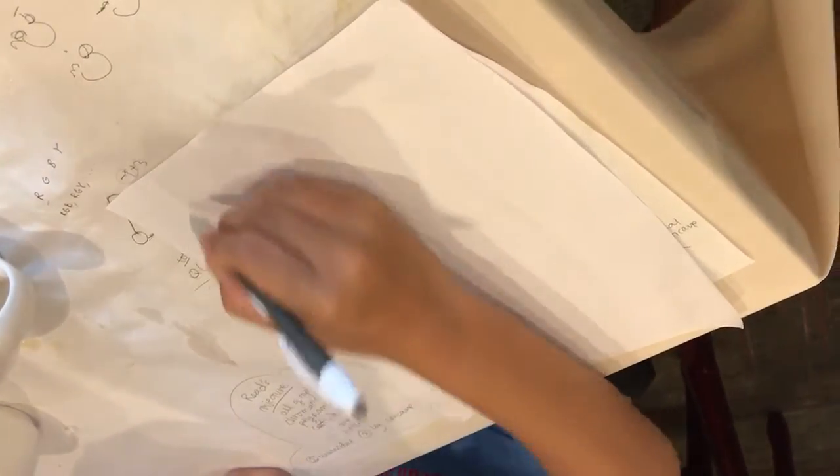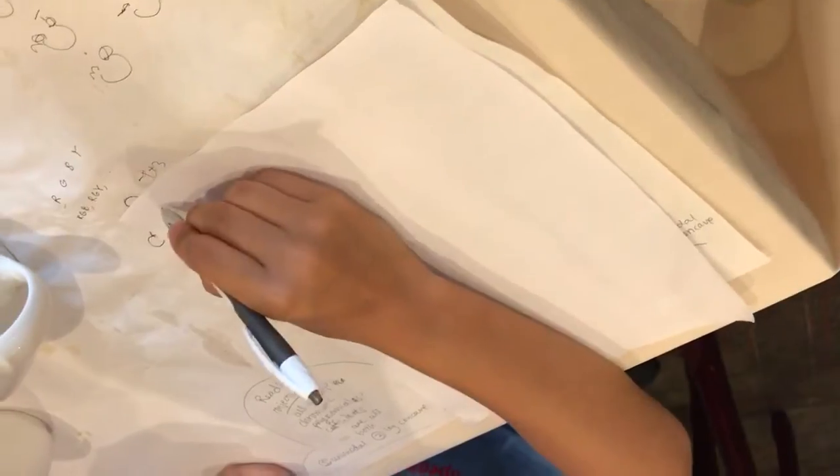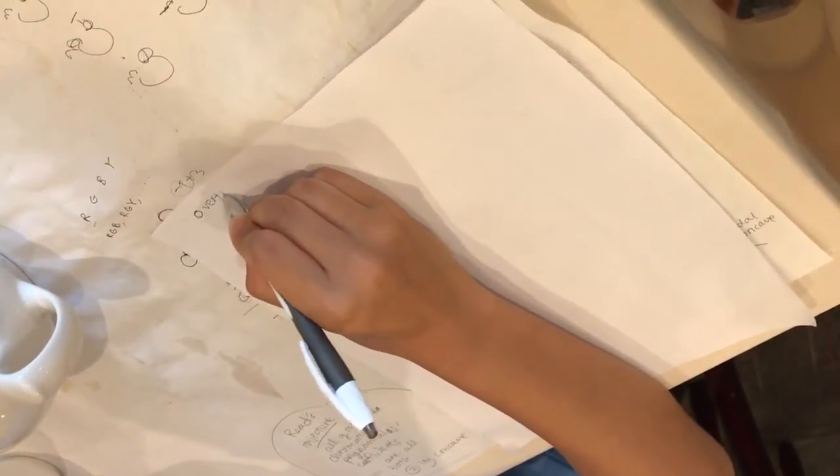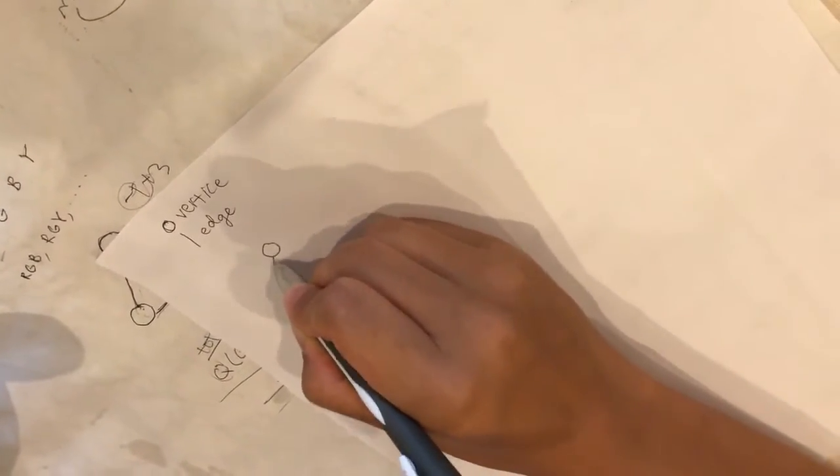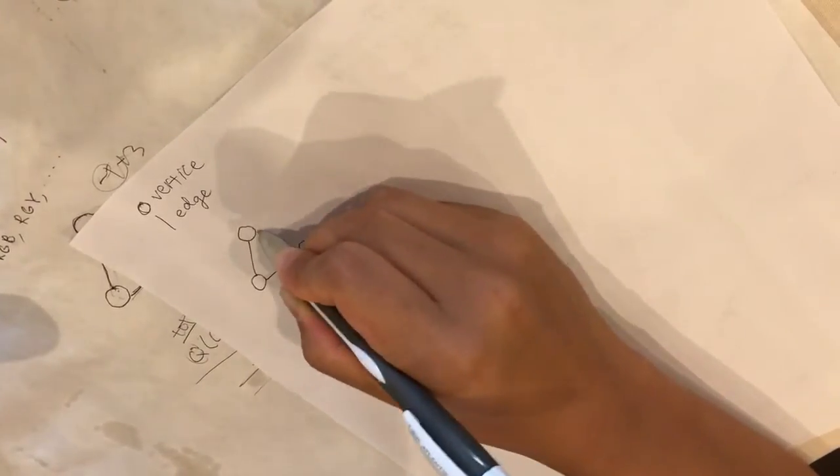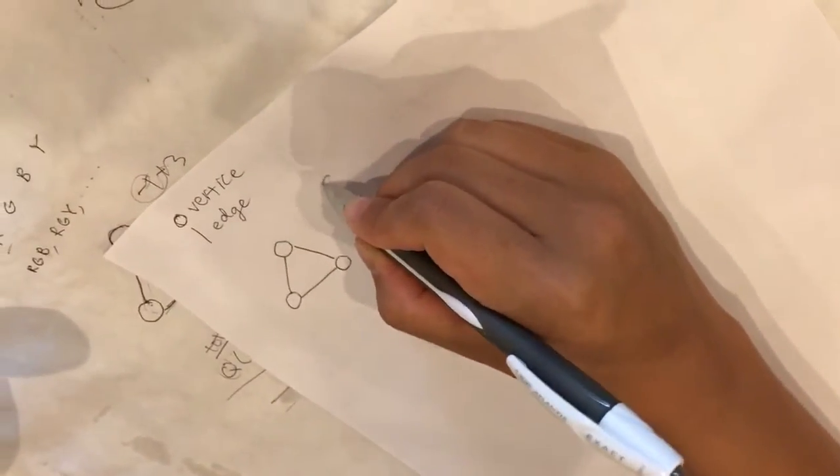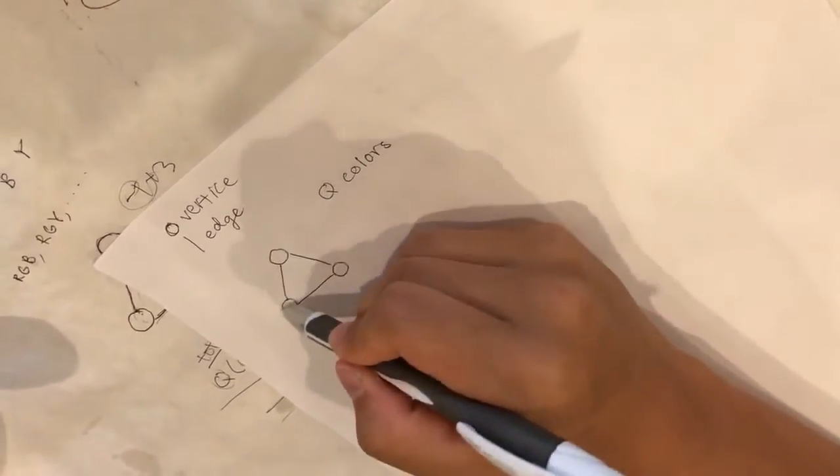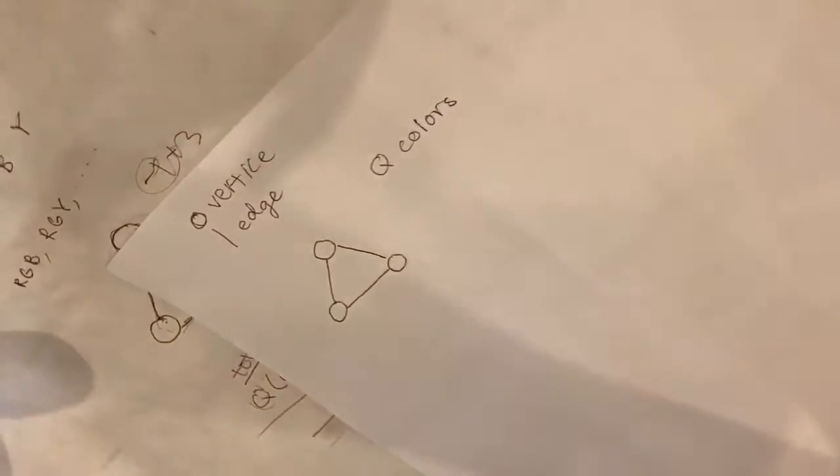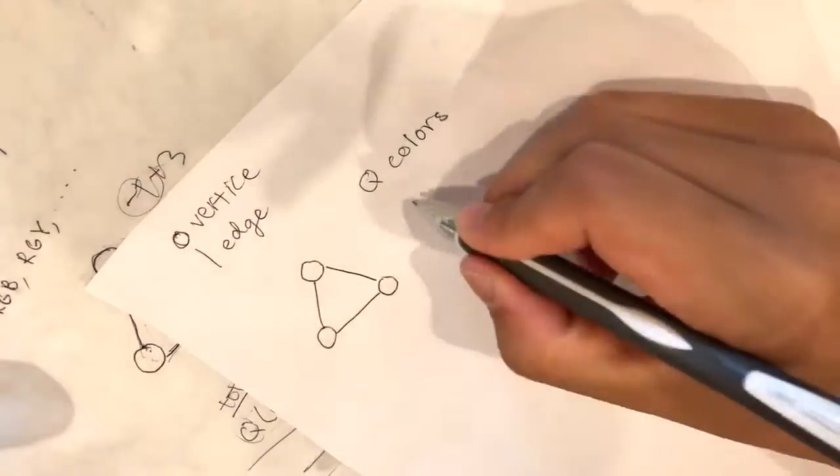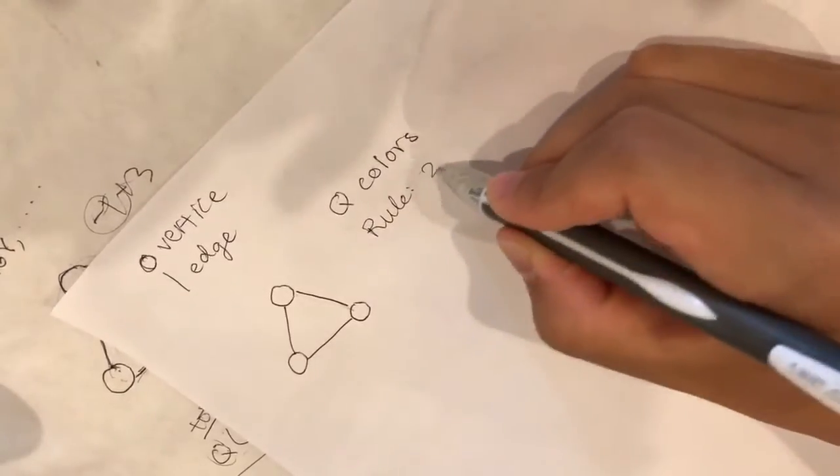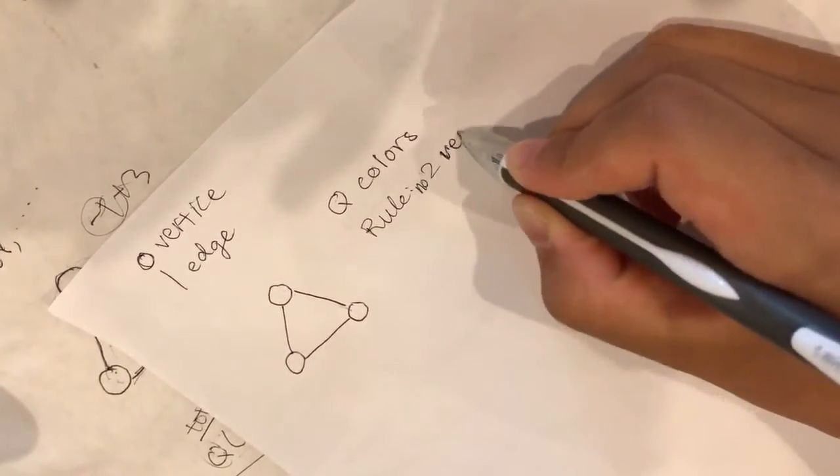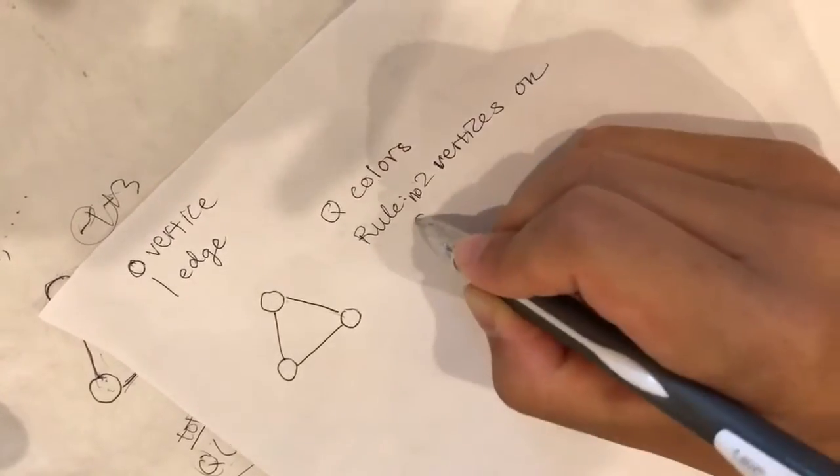We have a triangle. A triangle consists of two things: vertices, so this is a vertice, and edges, so this is an edge. So we have a triangle with three vertices, three edges. Now let's say we have two amount of colors, so two colors, and we want to color each of the vertices. We're only coloring the vertices. Now we have one rule.